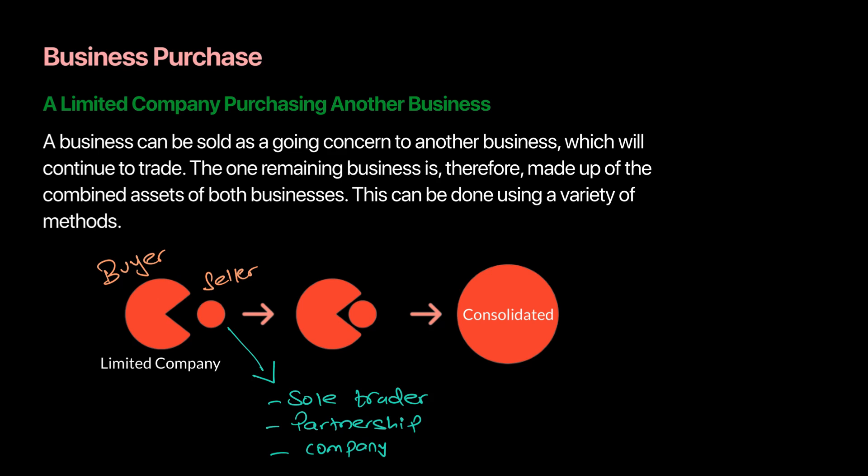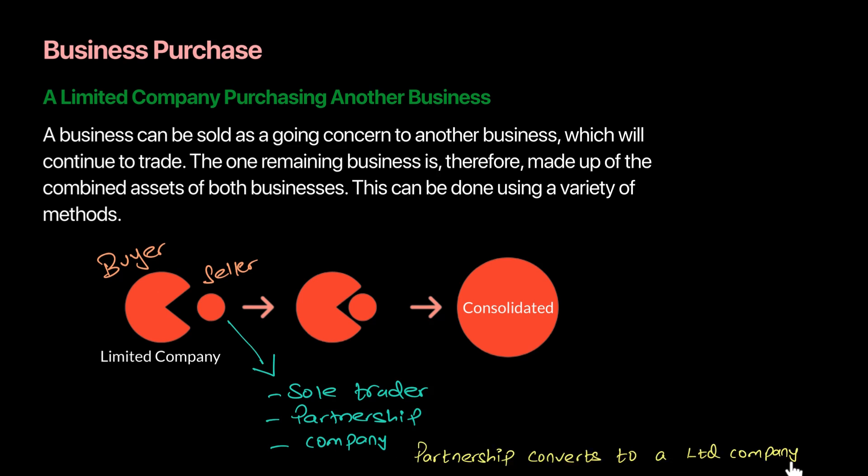We can also have another very common case: a partnership that wants to convert into a limited company. The same partners would shift from a partnership status and become a limited company. They want to attain limited liability status, shielding themselves from unlimited liability. From an accounting point of view, a new limited company is formed as the buyer and the partnership is the seller. We will go through the accounting for both the buyer and the seller perspectives.